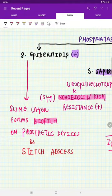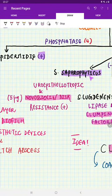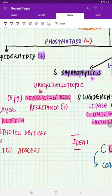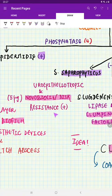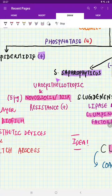Next comes saprophyticus. When you remember saprophyticus, just remember it is uroepitheliotrophic. It means it causes UTI in sexually active young females. Another important point is it shows resistance to novobiocin disc. This is the feature to say it is saprophyticus.